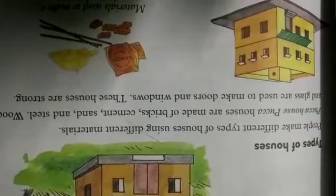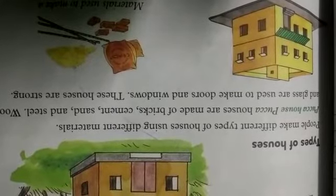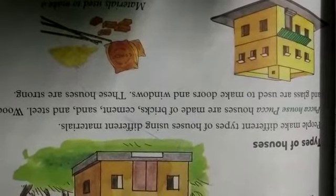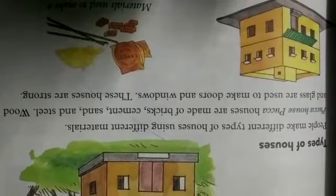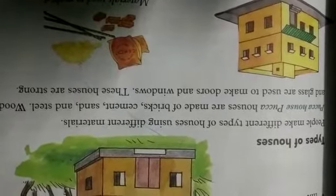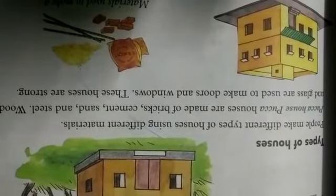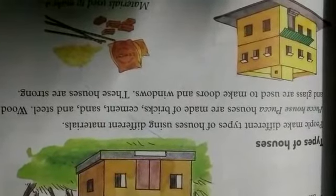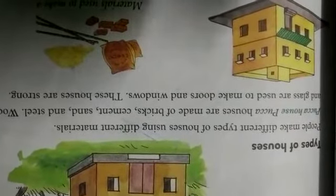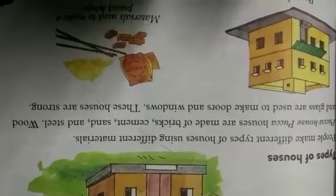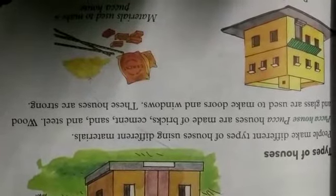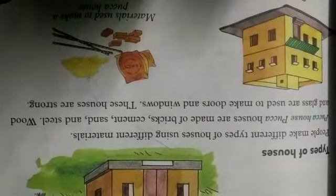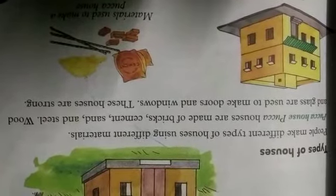Pucca Houses are made of bricks, cement, sand and steel. W-O-O-D Wood A-N-D and G-L-A-S-S Glass A-R-E are U-S-E-D Used T-O to M-A-K-E Make D-O-O-R-S Doors A-N-D and W-I-N-D-O-W-S Windows. Wood and Glass are used to make Doors and Windows.